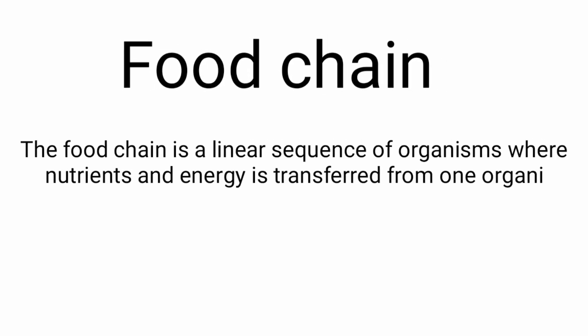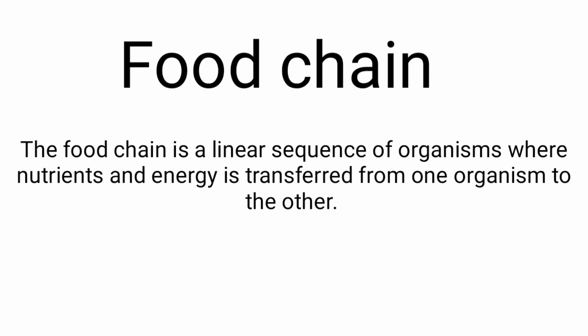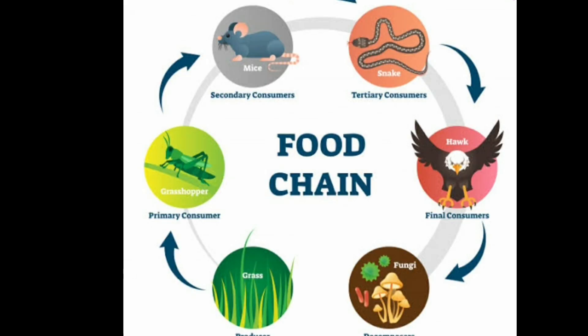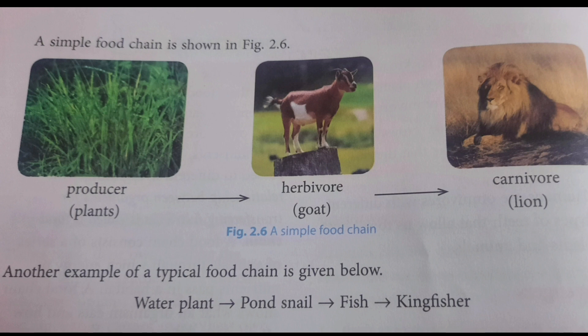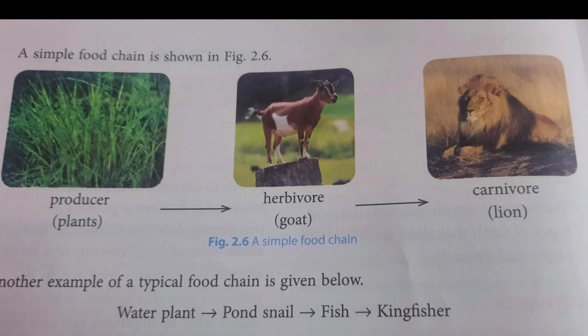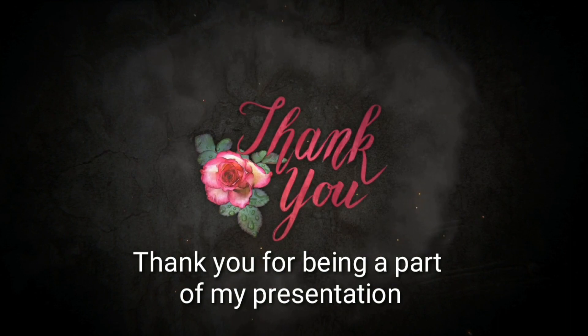Food chain. A food chain is a linear sequence of organisms where nutrients and energy are transferred from one organism to another. It is a series of animals through which energy or nutrients pass in a habitat, showing what each organism eats and how all organisms in that habitat depend on each other. All food chains start with plants, which are called producers, followed by herbivores and then carnivores. All animals are either directly or indirectly dependent on plants.